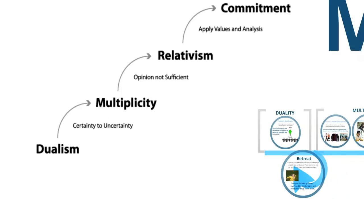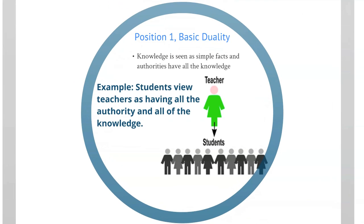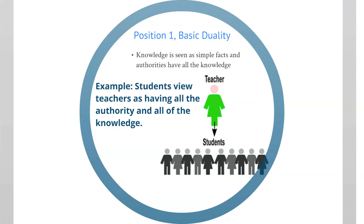Position one is basic duality. An example of this position is students view teachers as having all the authority and all of the knowledge.